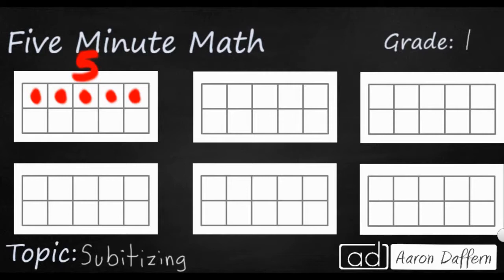So if you have, for instance, all but 1 of the top row, rather than counting 1, 2, 3, 4, you could think, well, the top row is 5, so 1 less than 5 is going to make 4. That's what subitizing is, instantly recognizing.